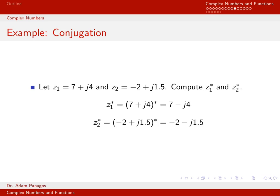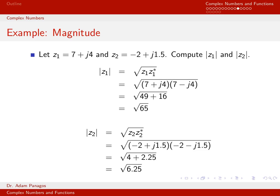Next, let's compute the magnitude of these complex numbers. For the same z1 and z2, I'll compute the magnitude of z1 and the magnitude of z2. By definition, the magnitude of a complex number is the square root of the complex number times its complex conjugate. We know what z1 is, and we just computed the conjugate of z1, which is 7 minus j4.